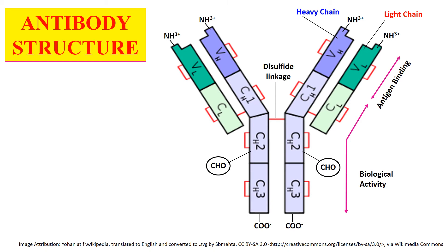Here you can clearly understand from this diagram of the antibody. As you can see, there are two chains — one light chain and one heavy chain. The green shaded shorter ones are the light chains, while the larger ones are the heavy chains. The red lines represent the disulfide bonds, meaning the light chains and heavy chains are connected with the help of disulfide bonds. The upper region where the antigen binds is the variable region — VH means variable region of heavy chain and VL means variable region of light chain. In case of the light chain, there is only one constant region denoted by CL, meaning constant region of light chain.